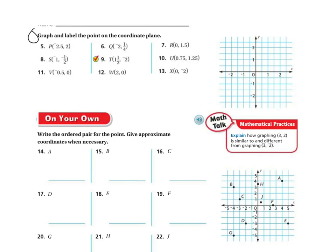On the first set you're going to be graphing the points, and on the second set you're going to find the coordinates. Let me do one that might be more challenging — let's plot U at (0.75, 1.25). 0.75 is positive, so it's to the right; that's like 3 quarters, going in between the half and the whole. Then going up 1.25: up 1, and 1 quarter is between the whole number and the half — so plot that point right there. For W at (2, 0): go over two holes and stay on the axis because y is 0 — plot my point right there and write W.